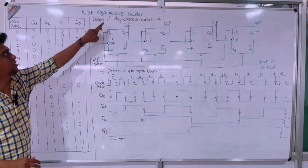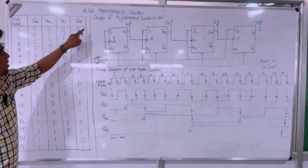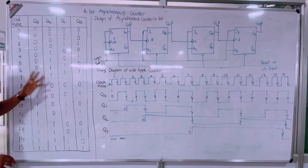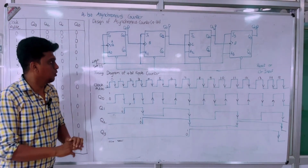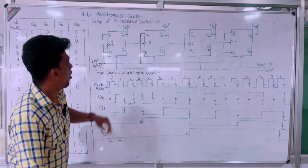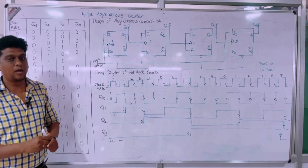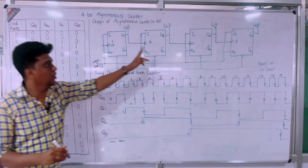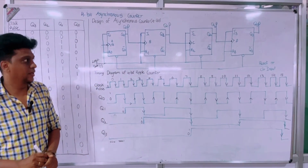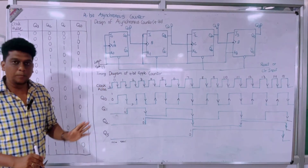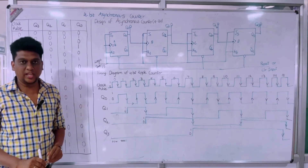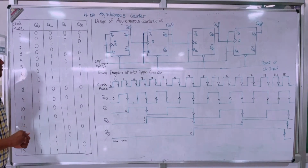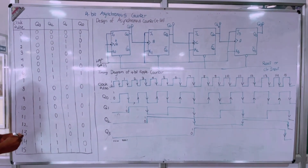This 4-bit asynchronous counter is able to count from 0 up to 15. As we know, to design a 4-bit asynchronous counter we require four flip-flops. We are going to implement this with the help of JK flip-flops. Let us now see the working of this 4-bit asynchronous counter model.